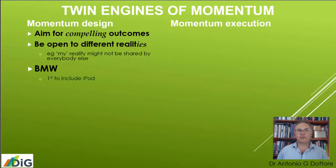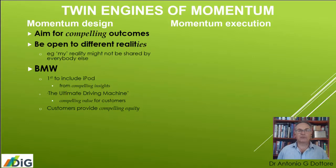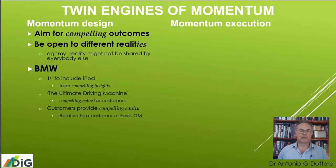Think about BMW. They were the first to include the iPod — this came from compelling insights into the type of people they wanted to attract. And then 'the ultimate driving machine' — isn't that lovely? That's compelling value for the customers. And of course the customers who buy and drive BMWs provide compelling equity to the firm, for example relative to the customers of Ford or General Motors.